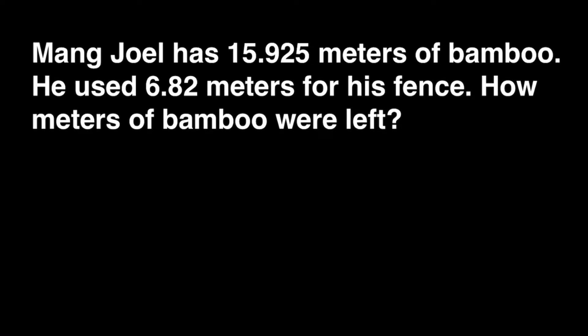We have the first problem. Mang Joel has 15 and 925 thousandths meters of bamboo. He used 6 and 82 hundredths meters for his fence. How many meters of bamboo were left? In order to solve this problem, we have to subtract the decimals. The question is, how do we subtract decimals? To subtract decimals, we have to follow these steps.